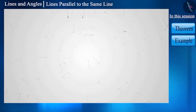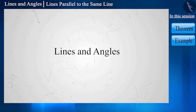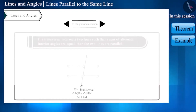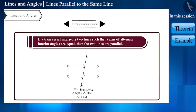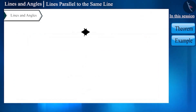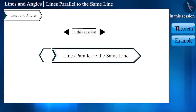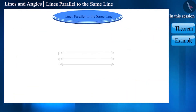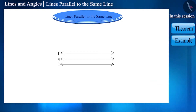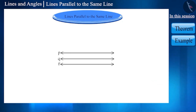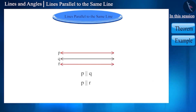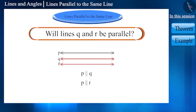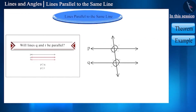Hello friends, welcome to this video on lines and angles. In the previous video we discussed some properties of parallel lines and transversal. Today we will discuss the properties of lines parallel to the same line. If line P is parallel to line Q and also parallel to line R, will lines Q and R also be parallel?